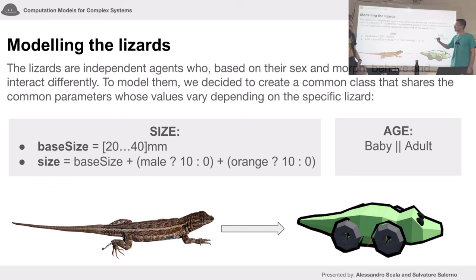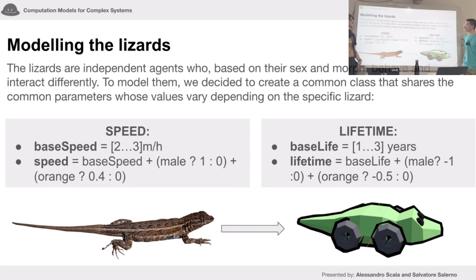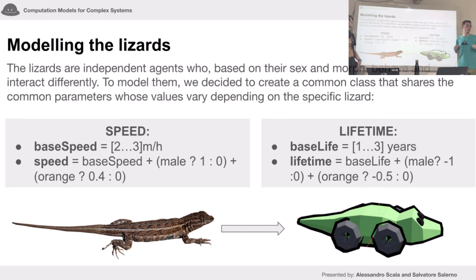The size depends on the morph: if it's an orange male it will be the biggest, up to 60 millimeters. Age is modeled simply as either baby or adult. Speed also follows the same pattern — if the lizard is orange and male it will be the fastest. The lifetime is the opposite: a lizard can live at most around four years, but if it's male and especially orange it will live a little less.